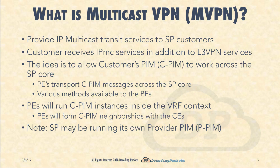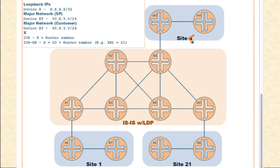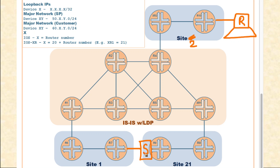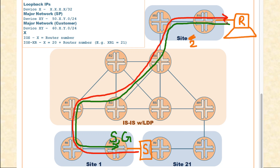For example, if a customer has receivers in site number two of the same VPN and a sender in site one of the same VPN, the receivers should be able to signal the sender to send traffic, and the sender should be able to transmit that traffic across the same SP core that the Layer 3 VPN is working on.